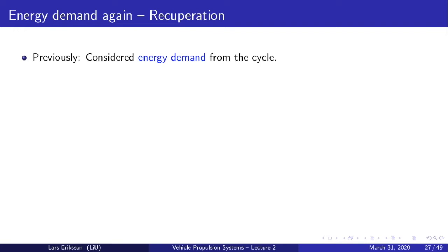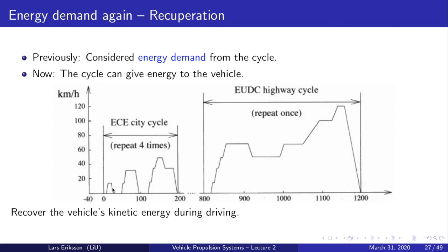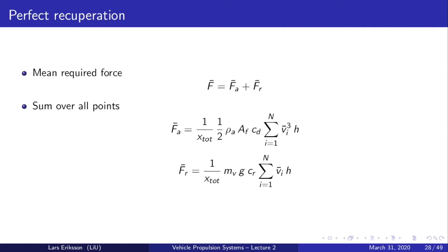Previously, we considered the energy demand from the cycle — tractive force and how much requirement for tractive force we have. Now we'll look into the aspect that the cycle can give energy back to the vehicle to reduce total energy consumption over the driving mission. We'll work on recovering the vehicle's kinetic energy during the braking parts. With perfect recuperation, mass effects — acceleration and deceleration — will perfectly cancel each other. So the energy required to accelerate will be perfectly matched with the deceleration part where we get energy back. Newton's second law is with perfect recuperation returned perfectly.